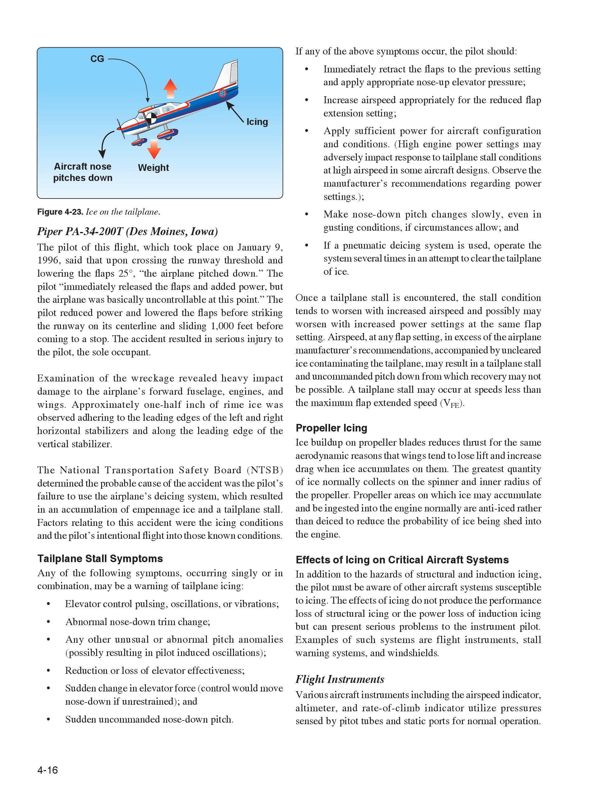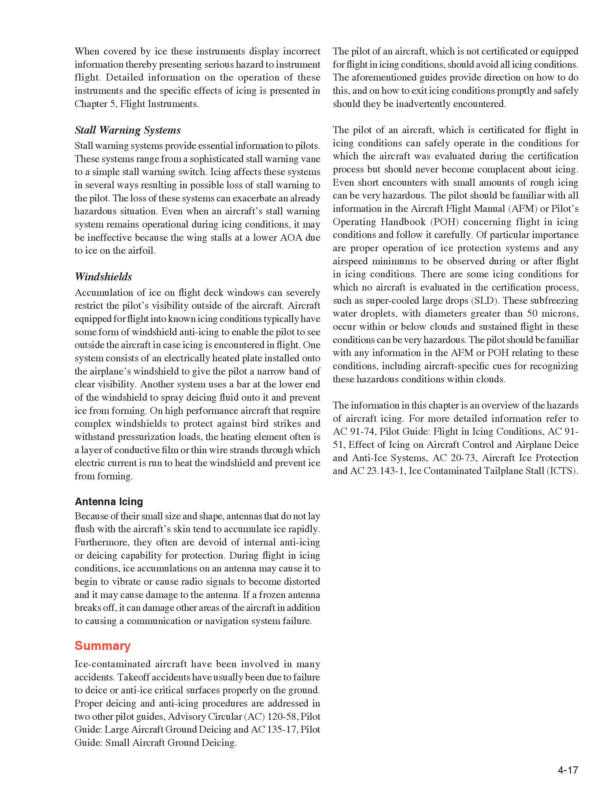Effects of Icing on Critical Aircraft Systems. In addition to the hazards of structural and induction icing, the pilot must be aware of other aircraft systems susceptible to icing. Examples of such systems are flight instruments, stall warning systems, and windshields. Various aircraft instruments — including the airspeed indicator, altimeter, and rate of climb indicator — utilize pressures sensed by pitot tubes and static ports for normal operation. When covered by ice, these instruments display incorrect information, thereby presenting a serious hazard to instrument flight. Detailed information on the operation of these instruments and the specific effects of icing is presented in Chapter 5, Flight Instruments.